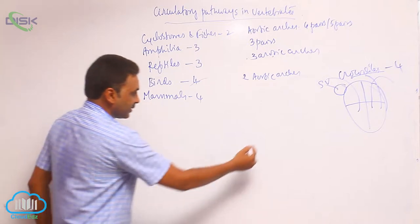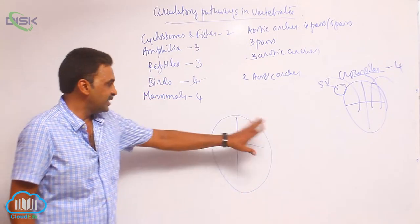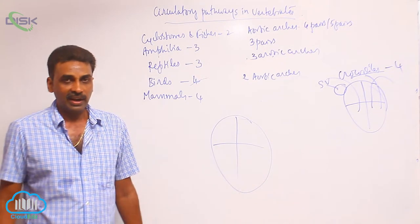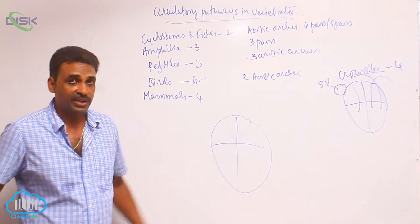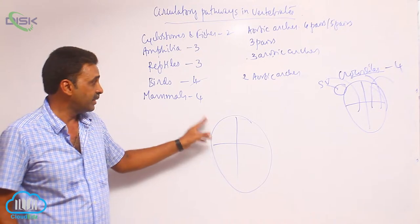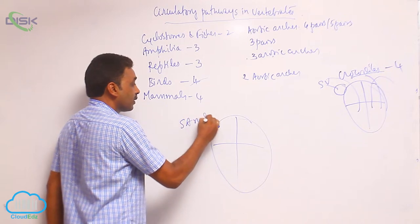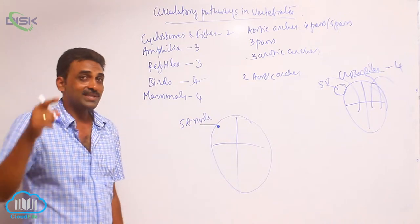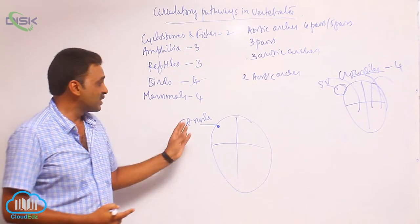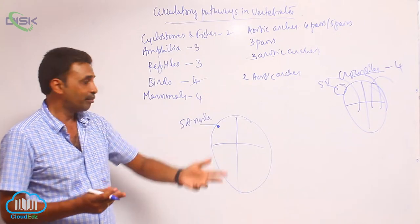In mammals, there is a four-chambered heart — both the atria and ventricles are completely divided, so there is complete double circulation. Like in birds, the sinus venosus is absent and it became the SA node. The sinus venosus, which was present in our ancestors the reptiles, got reduced and has come to lie inside the right atrium, where it has become the SA node.